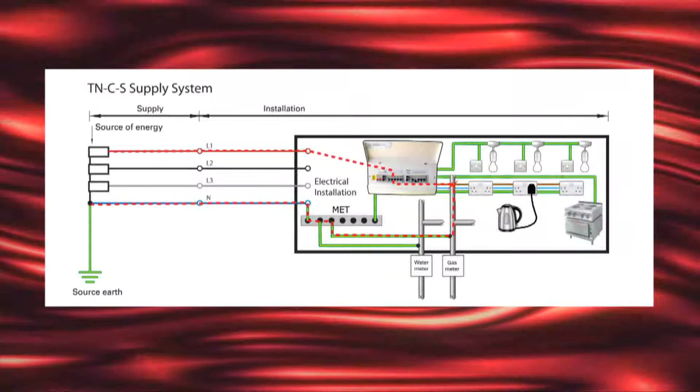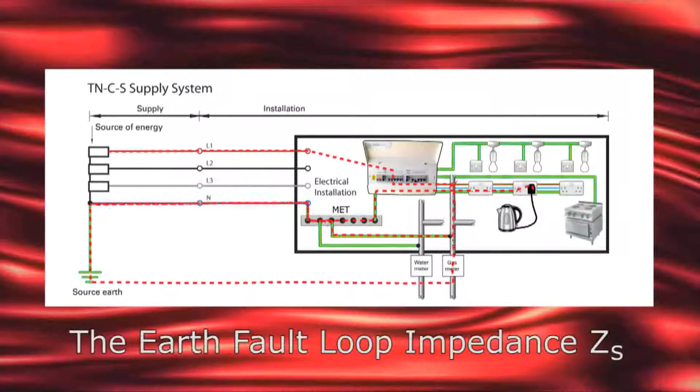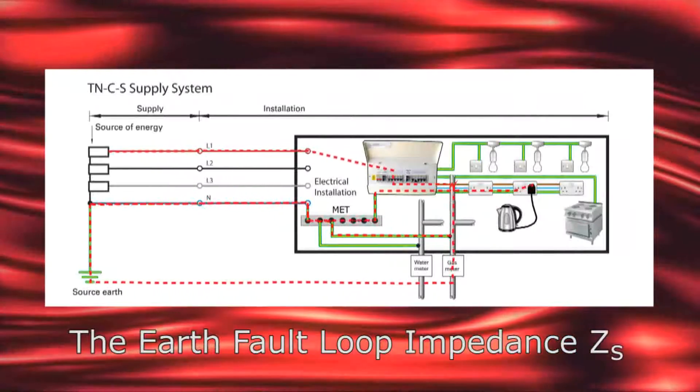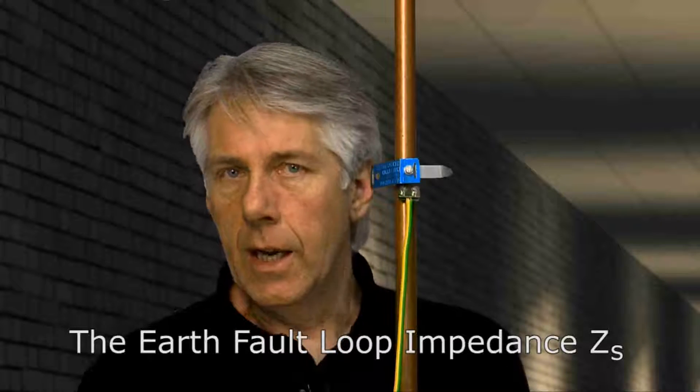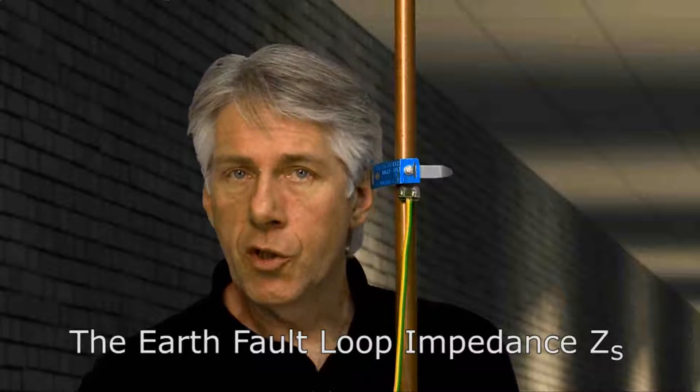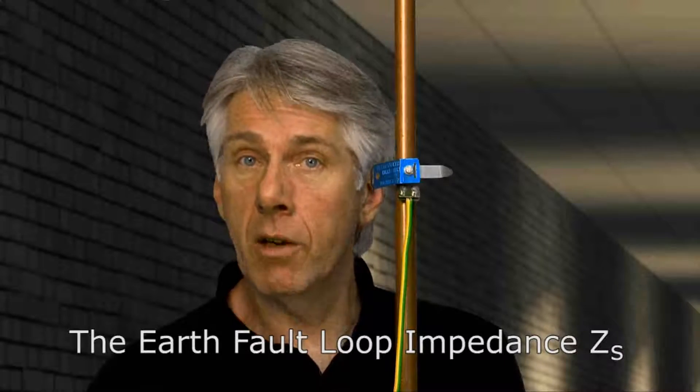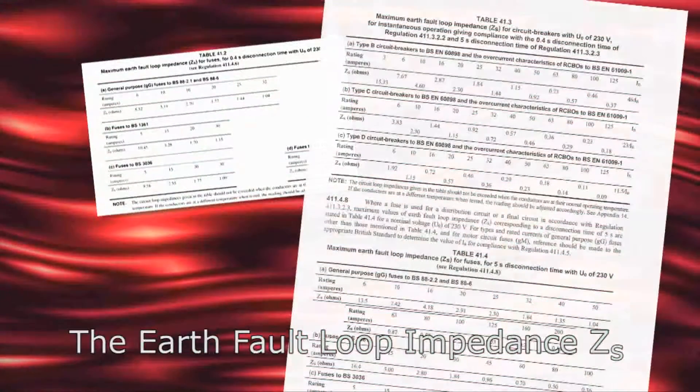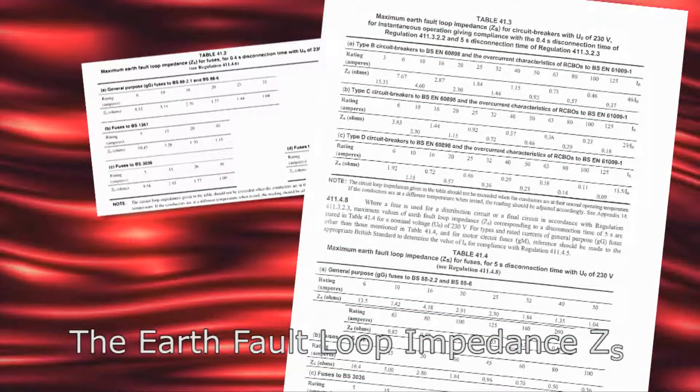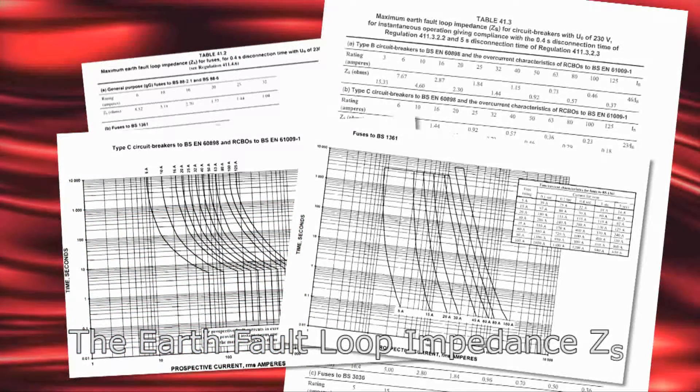The path that earth fault current takes back to the source of supply, whether through pipework and protective conductors or even the earth itself, is known as the earth fault loop, and its impedance ZS is measured in ohms. So when electrical installations are designed, it's important to keep the value of ZS low enough to ensure that sufficient current flows, thus causing the circuit protective device to operate within the required disconnection time. There are tables in the regulations which list maximum ZS values for different types of circuit protective devices, and these have been determined from the time-current characteristics graphs in Appendix 3 of the regs. We'll look at these in detail in other videos in this series.